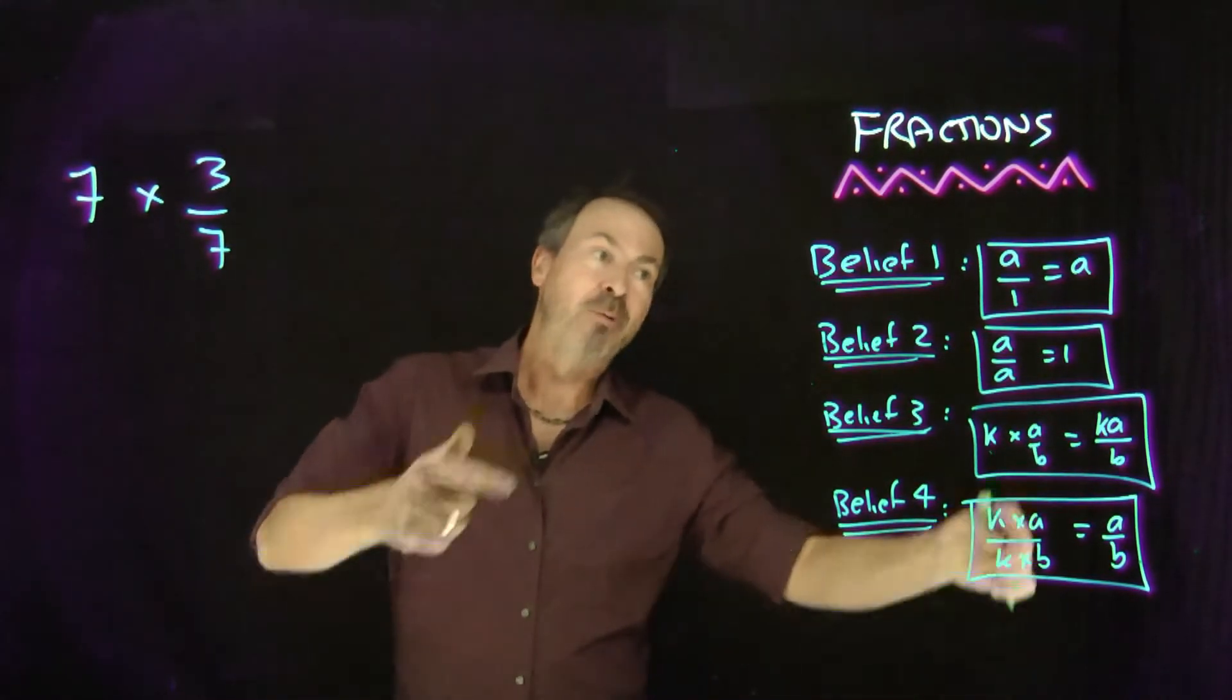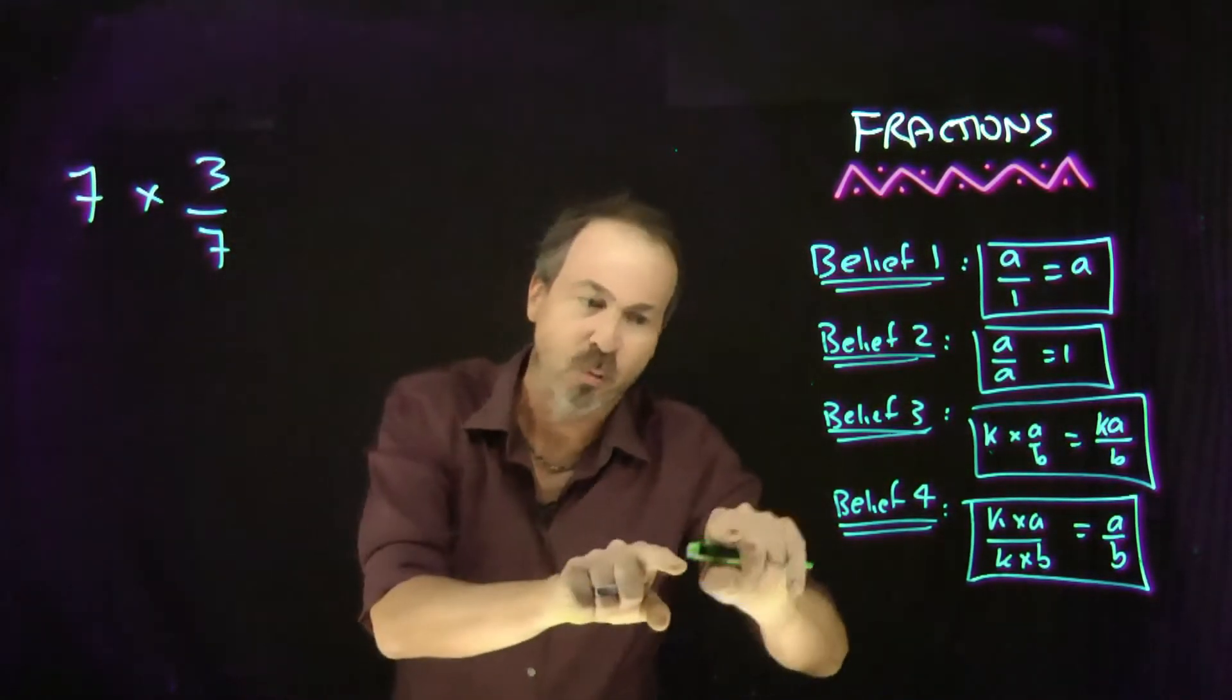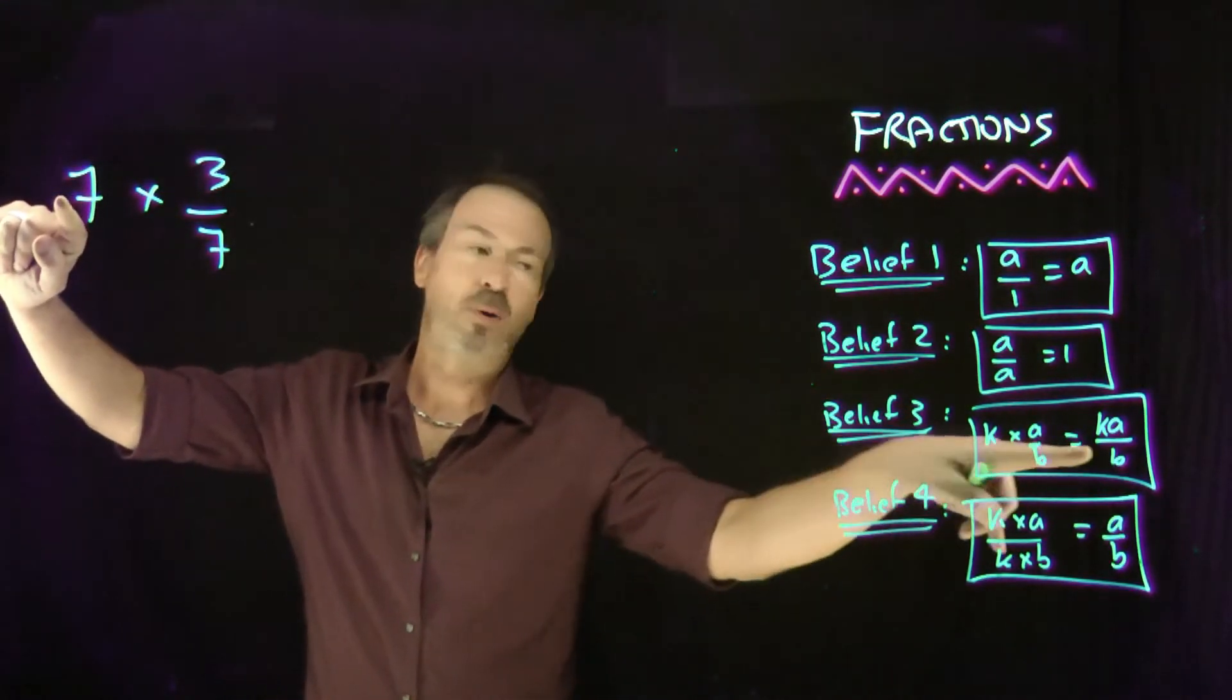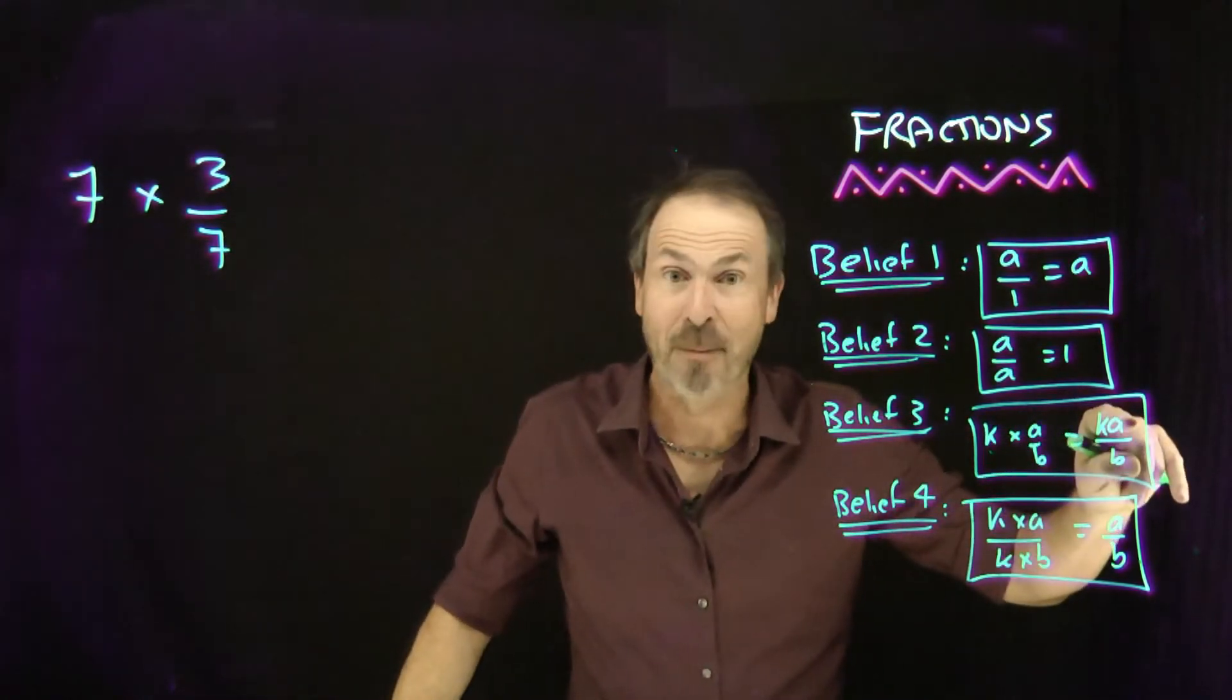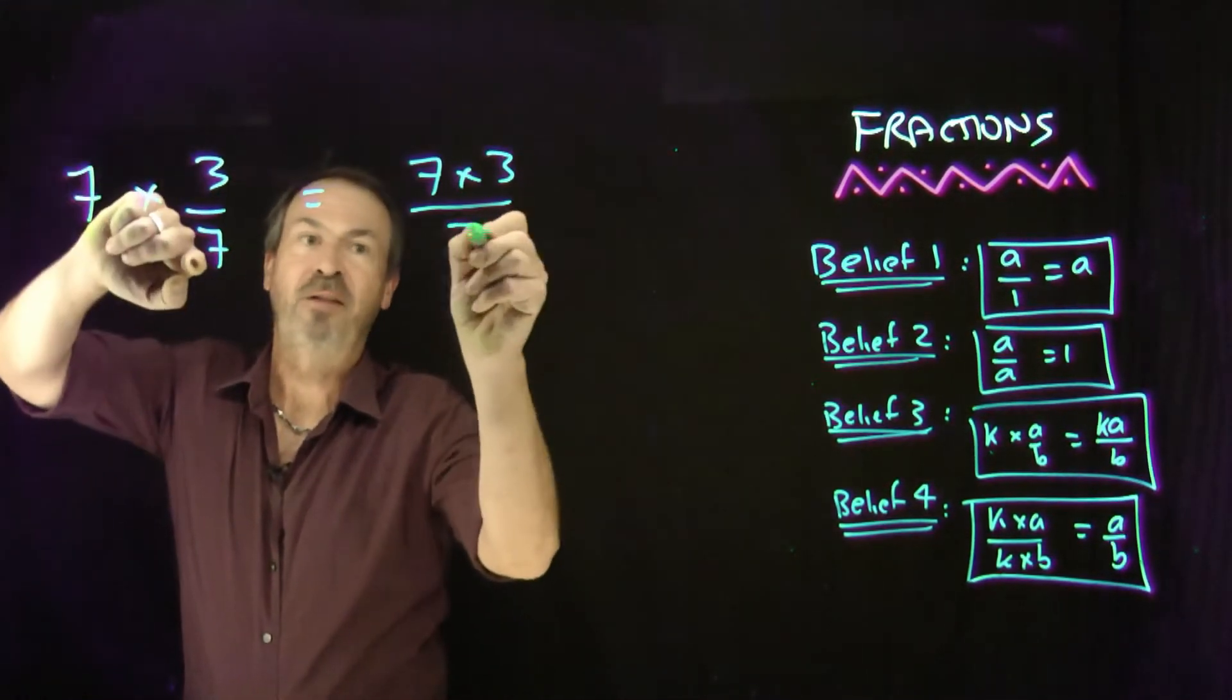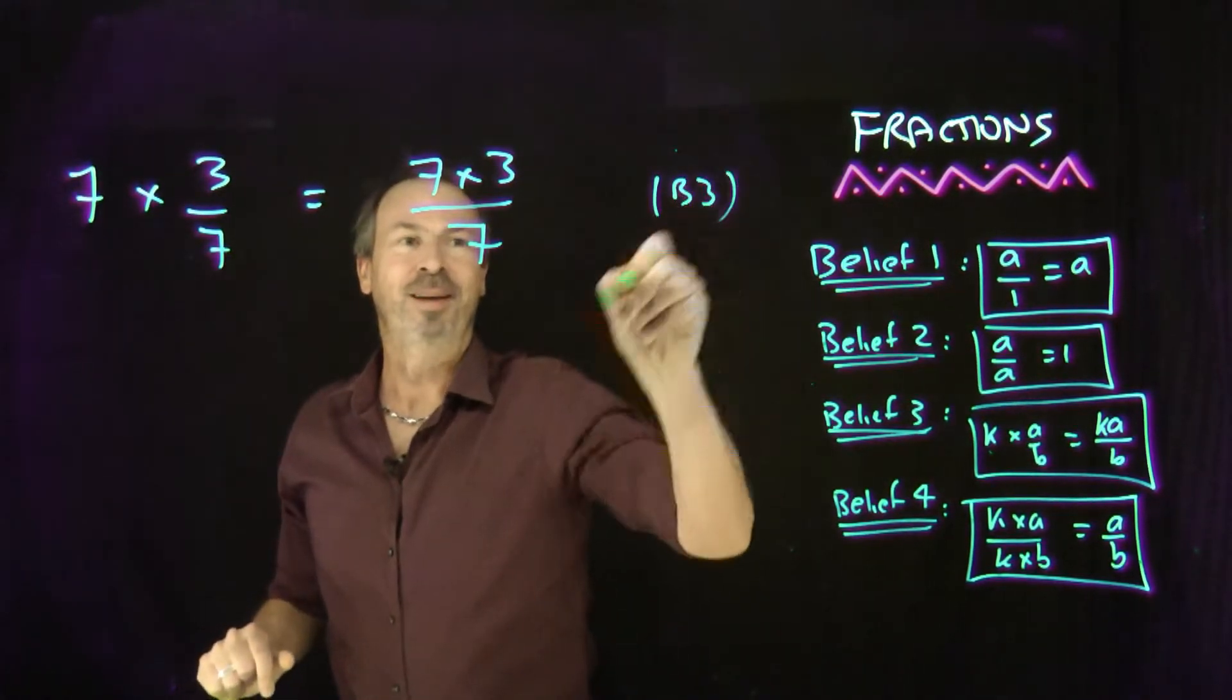So all right, so what I have to do is now play with these four fundamental beliefs here and show that after some work equals three. Okay, let's do it. I look at this and say, this looks like a setup for belief number three, because I've got 7 times a number over a number. By belief number three, will be 7 times the top number, leave the bottom number alone. So let me copy that—this would be 7 times the top number 3, leave the bottom number alone. Yes, that was belief number three.